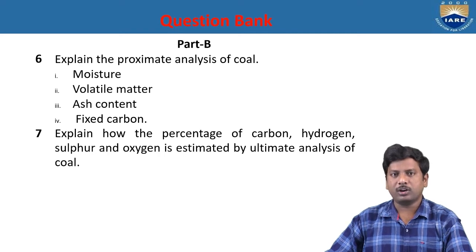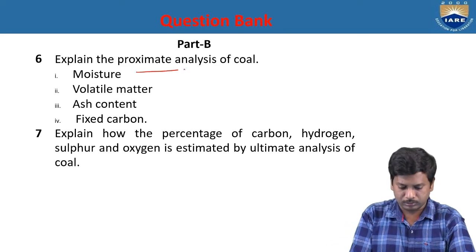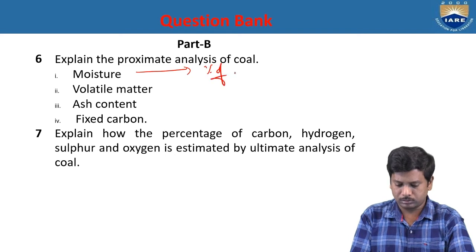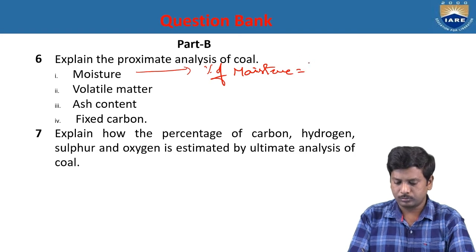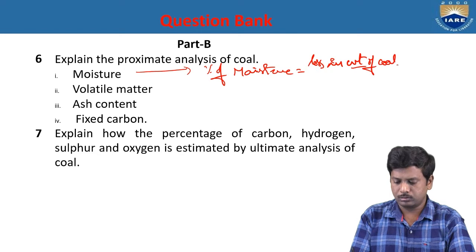Moisture content is determined by taking one gram of the coal sample in a crucible and using an oven, maintaining temperature of 100 to 110 degrees centigrade. After heating, the moisture content will be evaporated. From the final weight and initial weight of the coal, we can get the percentage of moisture. Percentage of moisture equals loss in weight of coal due to moisture divided by total weight of coal, multiplied by 100.